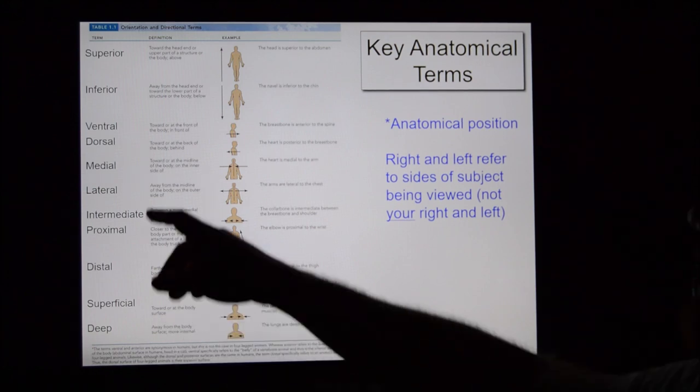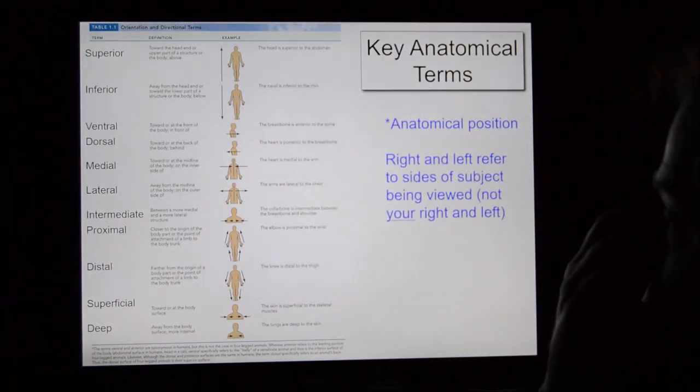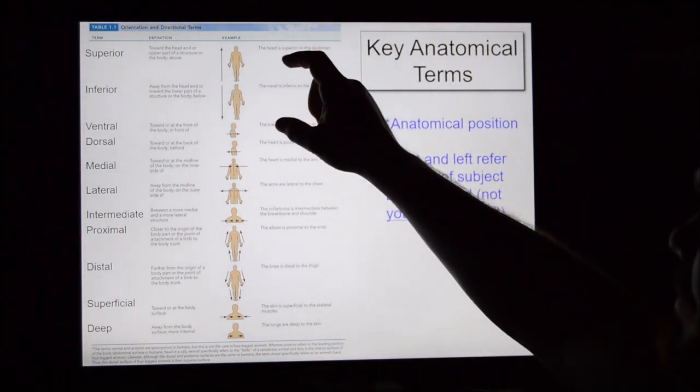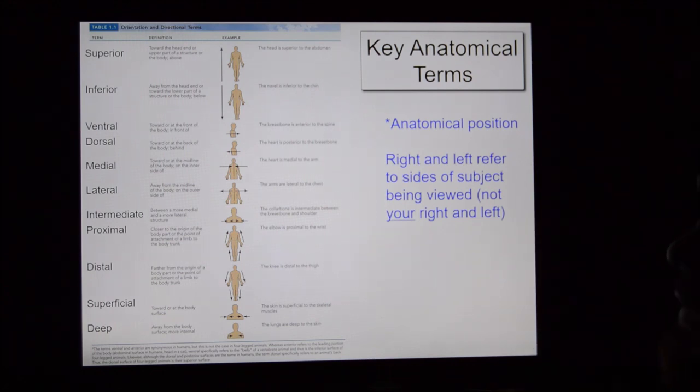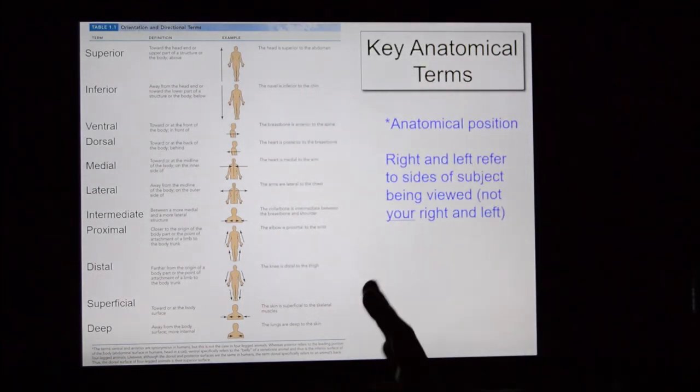Superior and inferior are pretty obvious. Superior means above, inferior means below. You have a superior nasal concha in your nose at the very top and an inferior nasal concha at the very bottom. My head is superior to my torso, my torso is superior to my legs. Ventral and dorsal: ventral means towards the front whereas dorsal means to the back. Fish have a dorsal fin on their back.